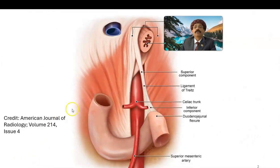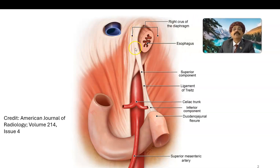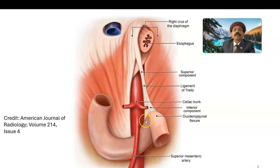This is the suspensory ligament of the duodenum, or suspensory muscle of the duodenum, extending from the right crus of the diaphragm. This is the right crus of the diaphragm. It contains skeletal muscle, elastic tissue, and smooth muscle. Here it connects the duodenojejunal junction to the right crus of the diaphragm.